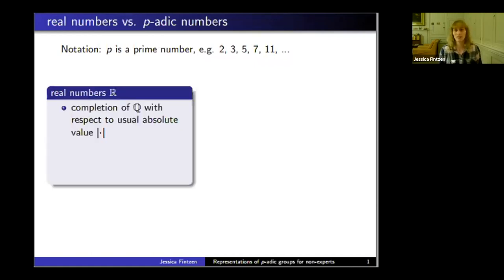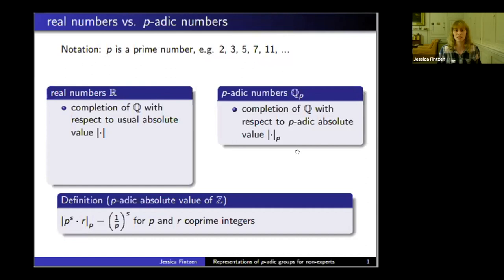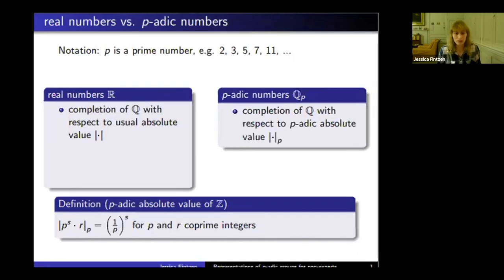You all hopefully know what the real numbers are. These are the completion of the rational numbers with respect to the usual absolute value. The idea is we can take a completion of the rational numbers with respect to p-adic absolute value instead.